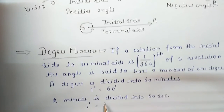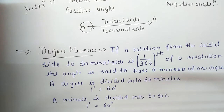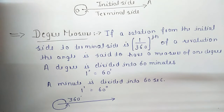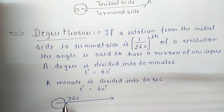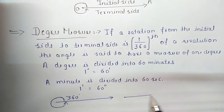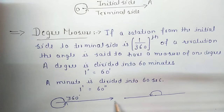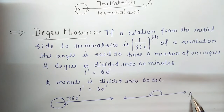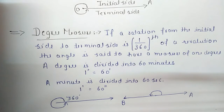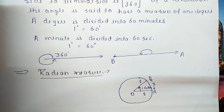Here are some common angles: 360 degrees represents a complete rotation, and 180 degrees is a half revolution. Now there is another unit for measurement of an angle called radian measure.